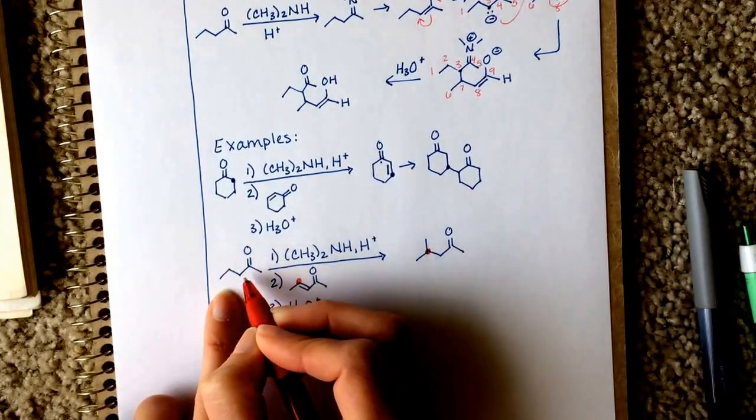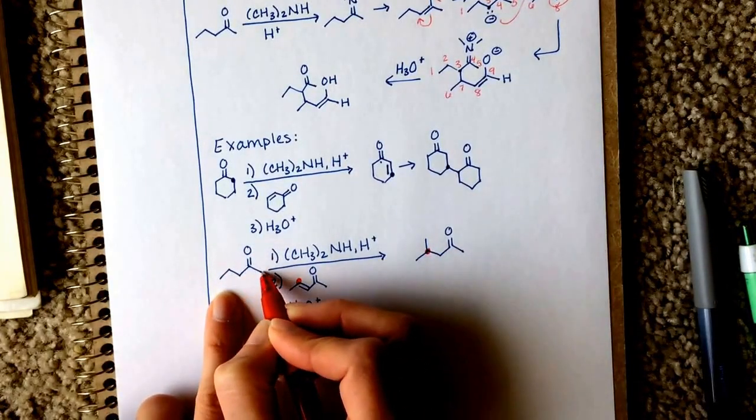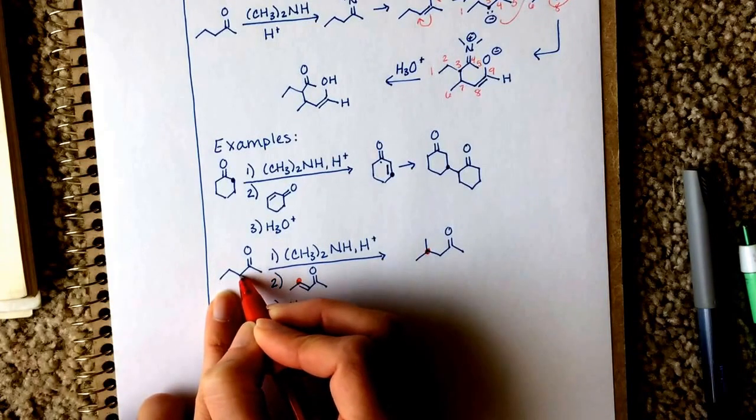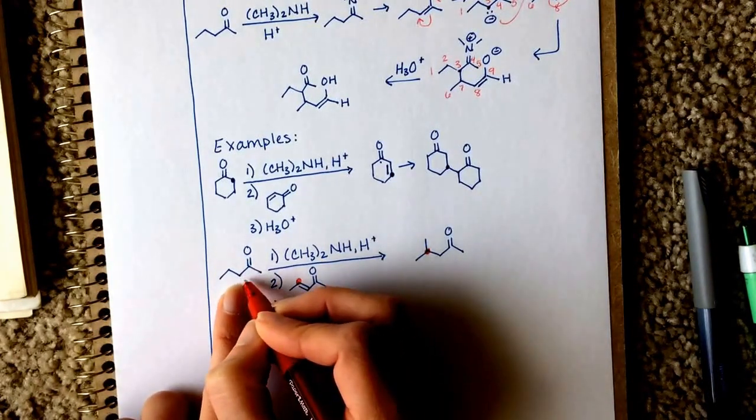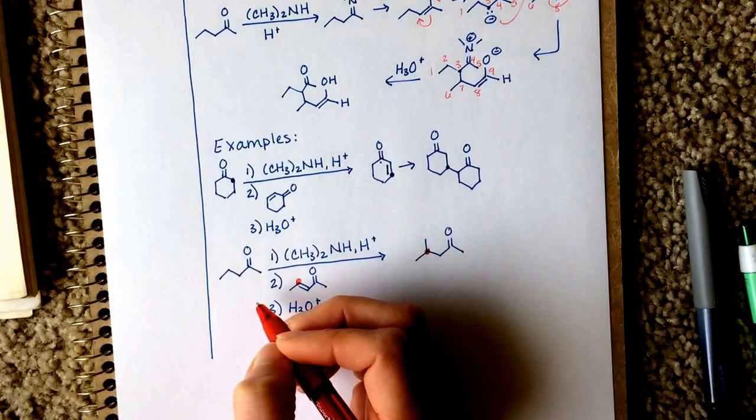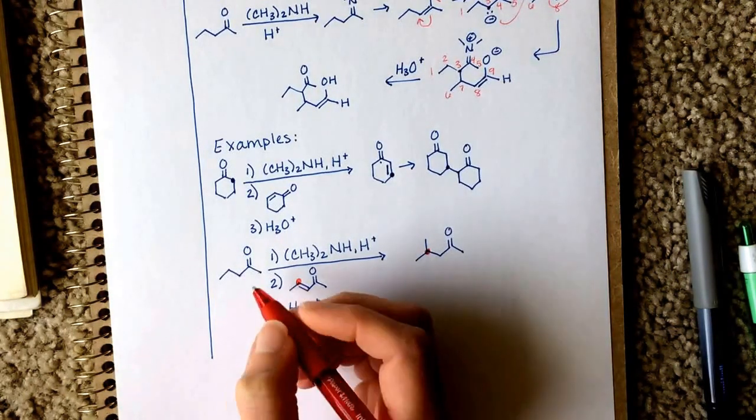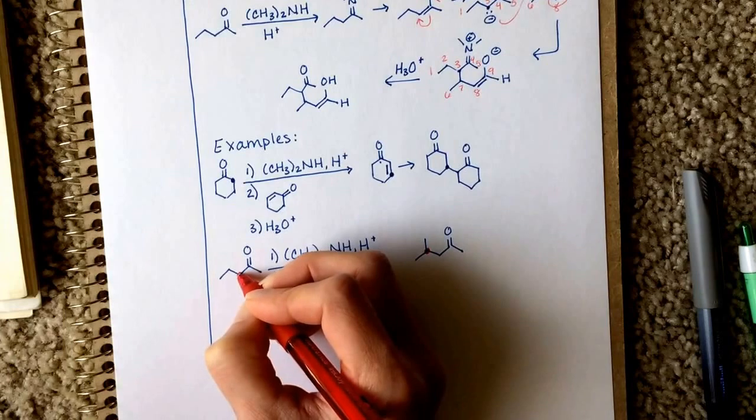What we want to do is attach our aldehyde or ketone from or at one of the alpha positions. And here we have two different alpha positions, and they're not symmetrical. This isn't symmetrical. So we have to think about which one is most likely to be doing the attaching. It is going to be the most substituted side.